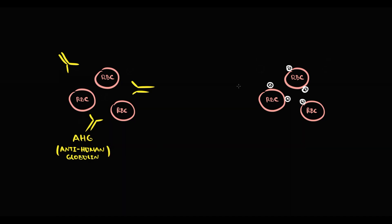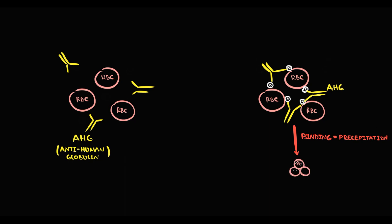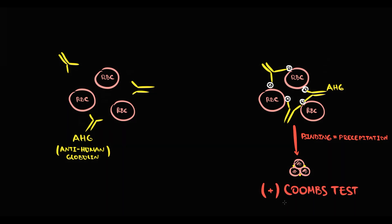In the first case, nothing happens. But in the second case, when anti-human globulin binds to antibodies on red blood cells, such red blood cells aggregate and precipitate. Agglutination of red blood cells in the presence of anti-human globulin is considered a positive Coombs test. So a positive Coombs test tells us about the presence of antibodies on red blood cells.